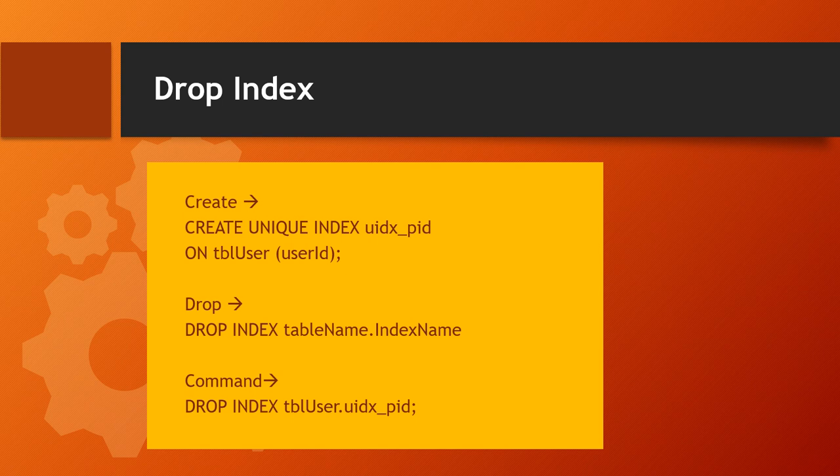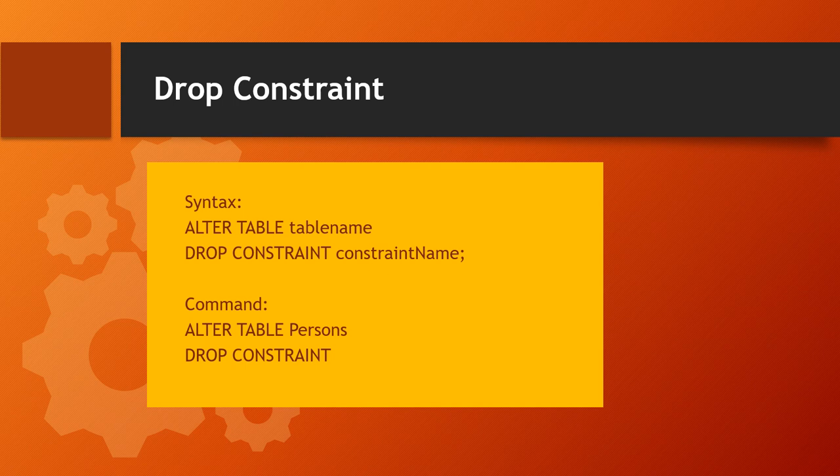Sometimes for performance and optimization we use indexes, but indexes can cause trouble when you have lots of data and lots of indexes on your table — it will slow the result of your SELECT query. Here is the syntax: first create a unique index with CREATE UNIQUE INDEX index_name ON tbl_user (column_name), then drop it with DROP INDEX table_name.index_name. For example, the index name uidx_pid is dropped using DROP INDEX table_name.uidx_pid.